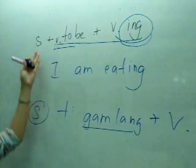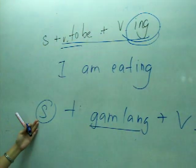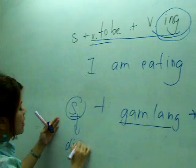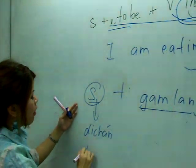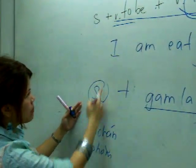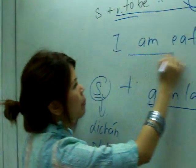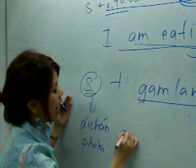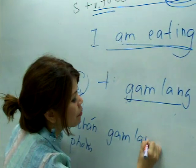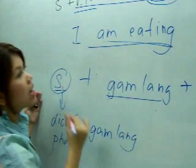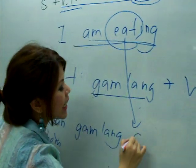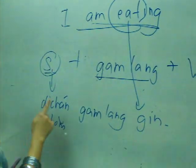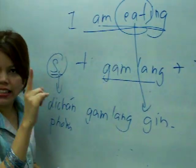For example, 'I am eating.' The subject 'I' in Thai is ดิฉัน (di chan) for a woman, and ผม (pom) for a man. 'To be plus -ing' is กำลัง (kam lang). 'To eat' is กิน (gin). So 'I am eating' becomes: ดิฉัน กำลัง กิน.